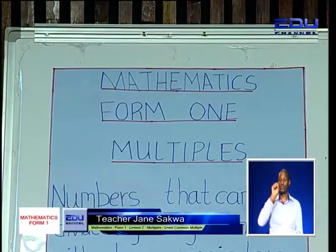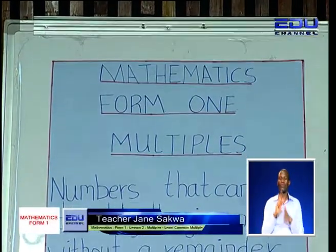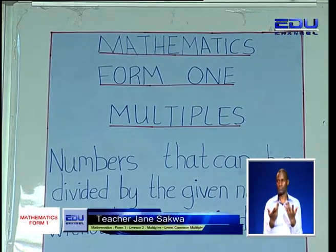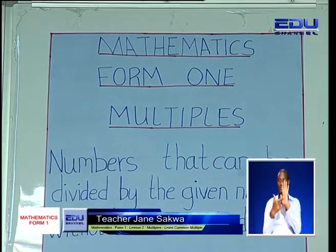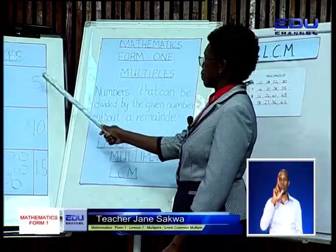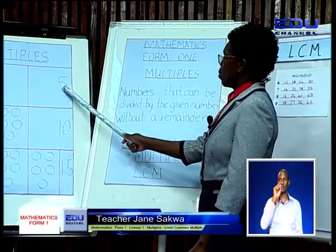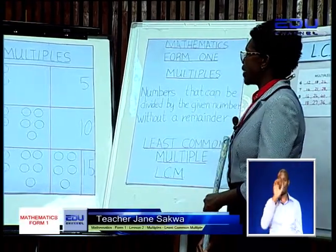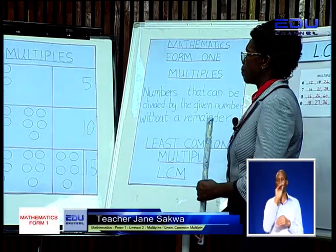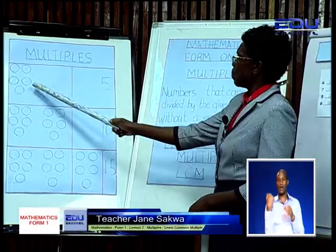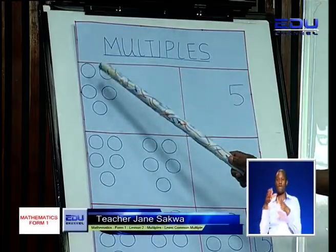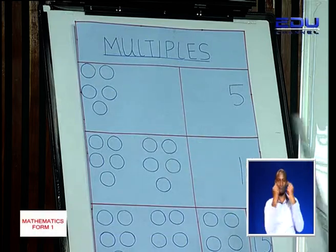Now, what is a multiple? I have an example here — multiples of 5. We want to put numbers in groups of 5. So our first group is 5: 1, 2, 3, 4, 5.